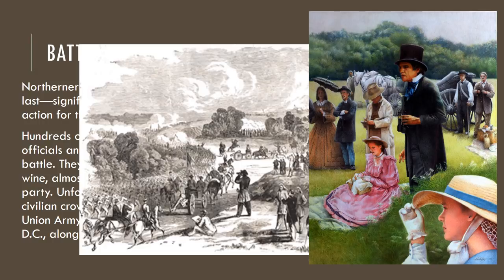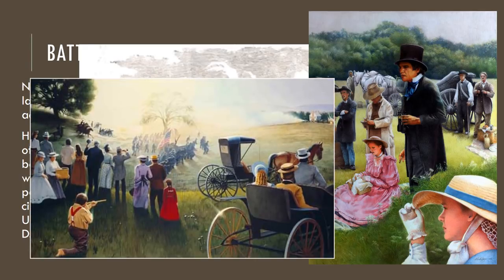Unfortunately, once the tide of the battle turned, this civilian crowd was caught up in the frenzied retreat of the Union army as they all made their way back to Washington DC. Can you even imagine? Draw your own picture of spectators coming out to watch the battle for themselves next to your notes.